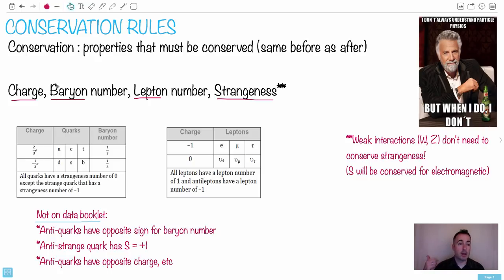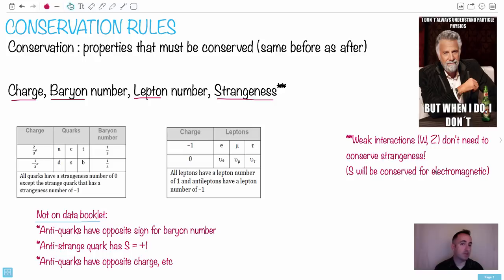It's going to be charge, baryon number, something called lepton number, and something called strangeness. Now strangeness is not always having to be conserved — the weak interactions, the ones with the W plus/minus bosons or the Z bosons, those don't have to conserve strangeness, they're allowed to violate it. But strangeness will be conserved for electromagnetic interactions or things that involve photons. These two tables here are given on your data booklet, so you don't have to memorize these.